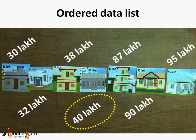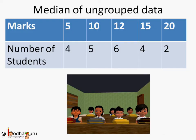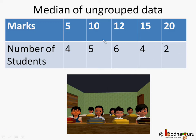But this is a very simple example of median. Now say this table represents the marks obtained by a given number of students in a class test. That is 4 students got 5 marks, 5 students got 10 marks, 6 students got 12 marks, and so on. So the total number of students is equal to 4 plus 5 plus 6 plus 4 plus 2, which is equal to 21.